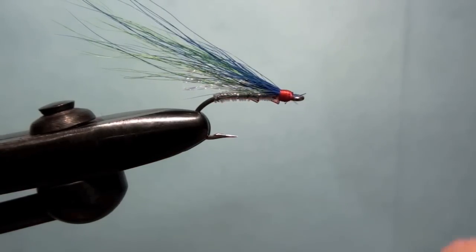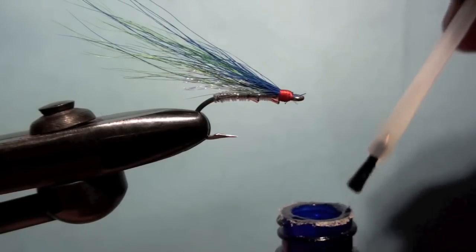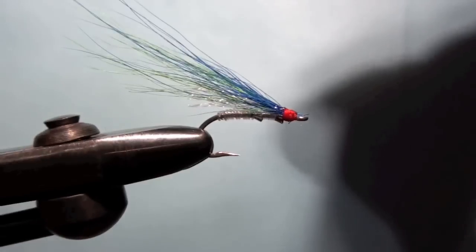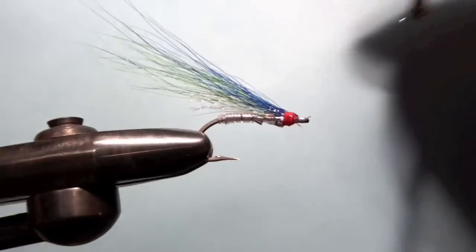Slap a little bit of hard as nails head cement on there. I like this stuff. It kind of keeps everything shiny. And you don't need too much. It's just a little teeny fly. Hit the bottom of it. There you have Kelsey's Hope.